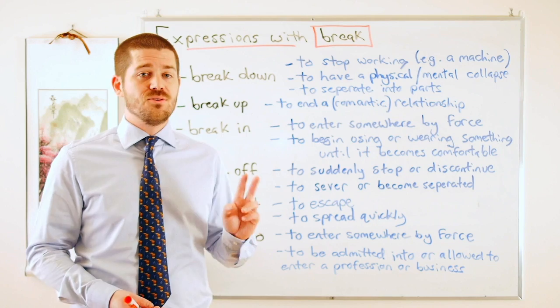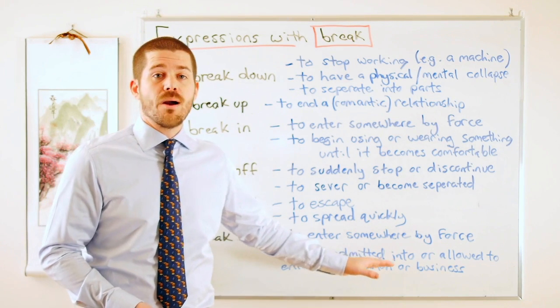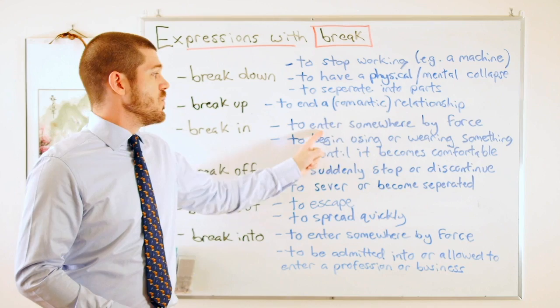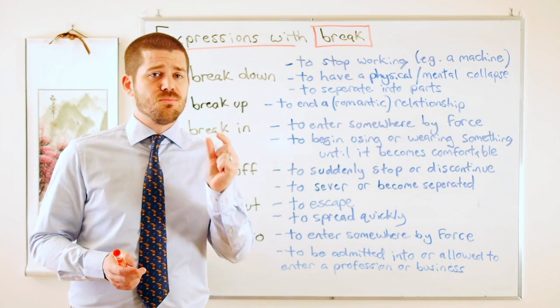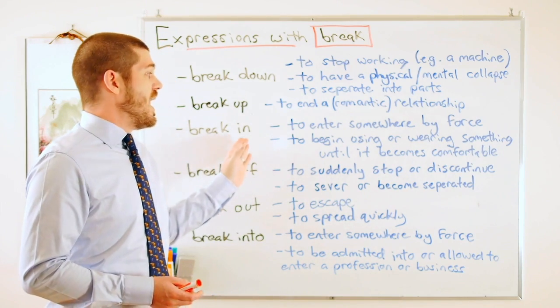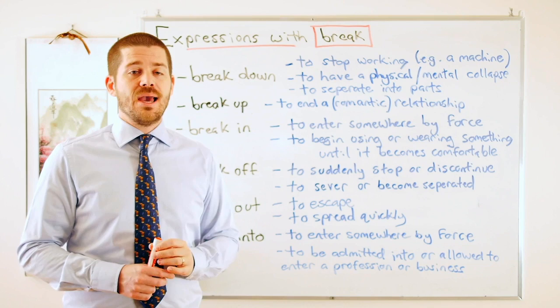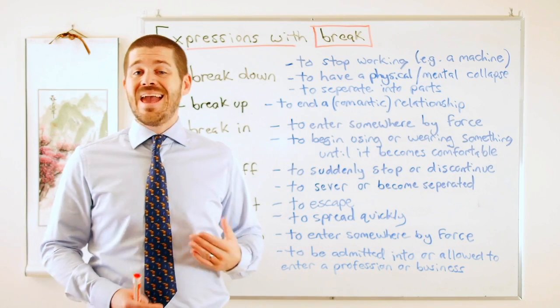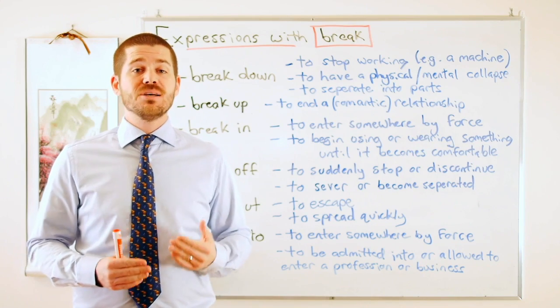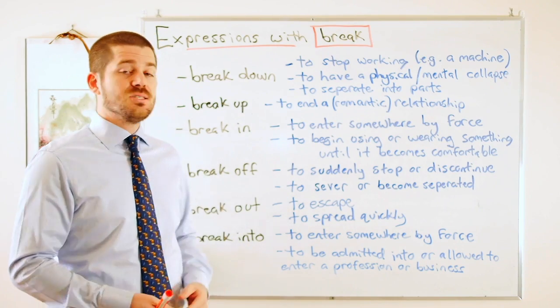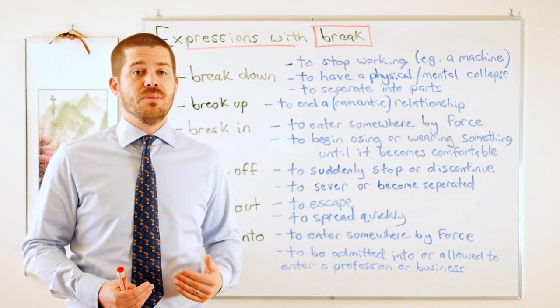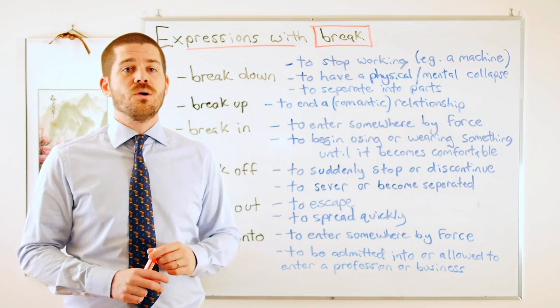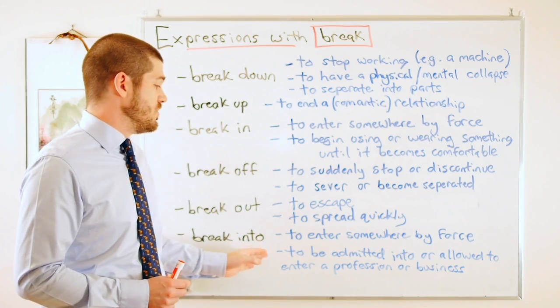And last one. We can see here break into. Again there's two definitions. The first one says to enter somewhere by force. You may recognize this definition. If we go up to break in, we have the same definition. But there is a small difference. With this one I don't need an object. Remember before I said someone broke in. But if I have break into, I cannot say someone broke into. I must use an object. So I have to say someone broke into my apartment or someone broke into the building. But up here I don't need an object when I use break in. But again break into must take an object.